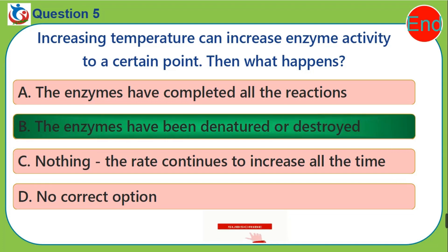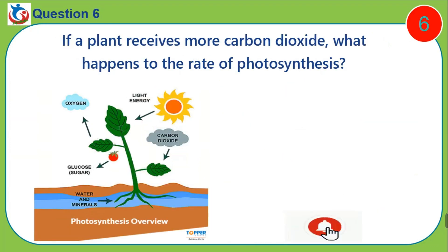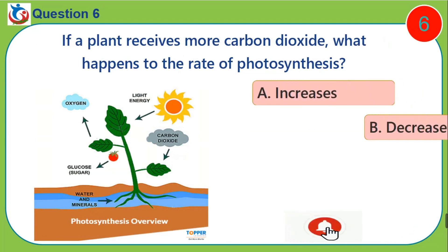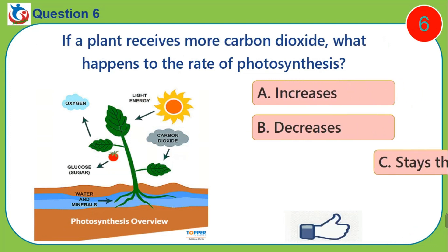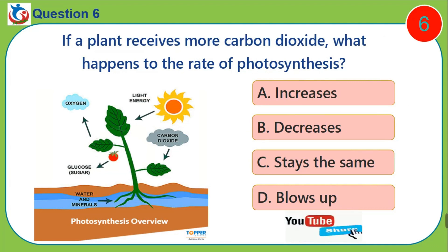Please like this video, subscribe to this channel and click the bell button — it's totally free. Question six: If a plant receives more carbon dioxide, what happens to the rate of photosynthesis? A) increases, B) decreases, C) stays the same, D) blows up.